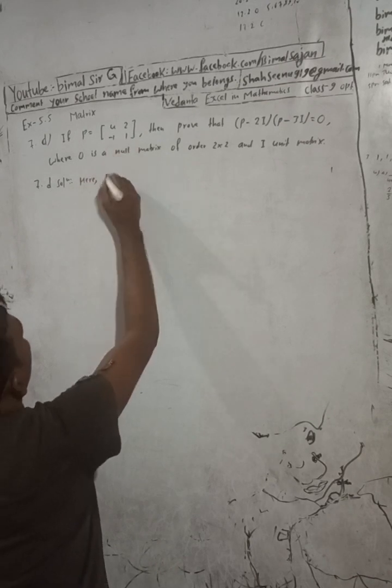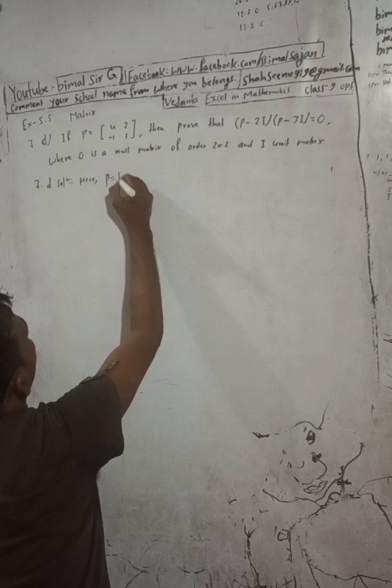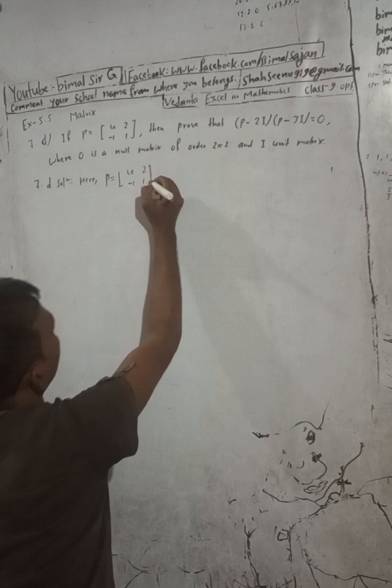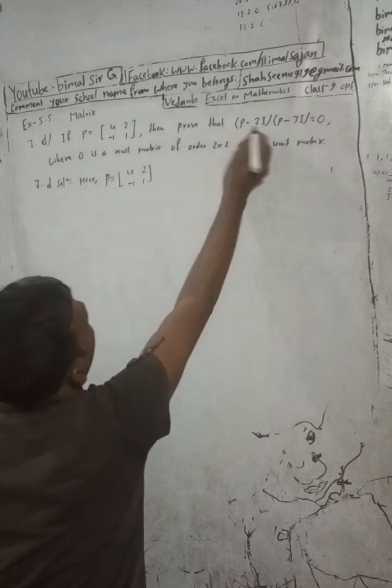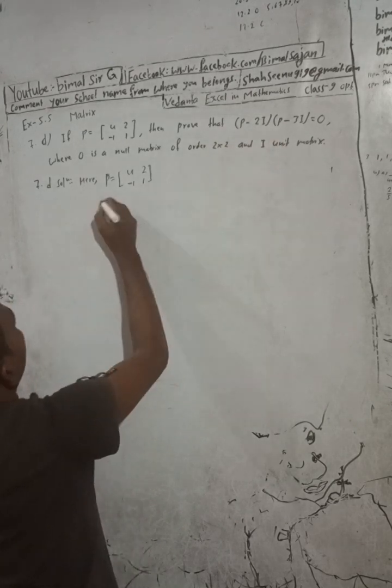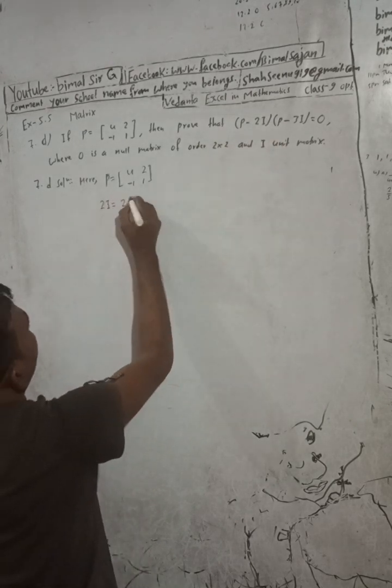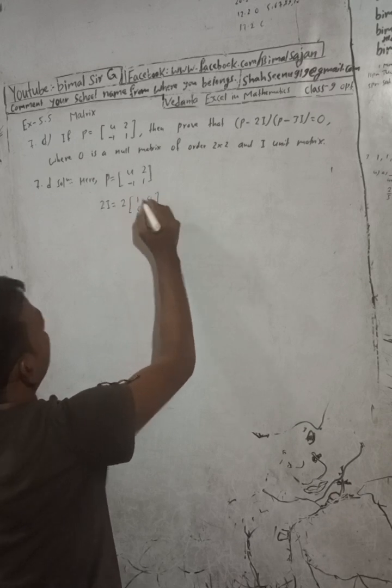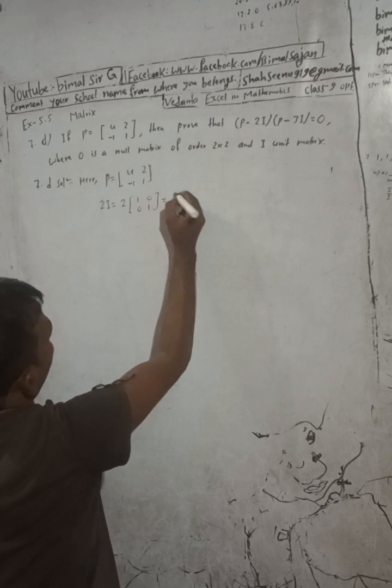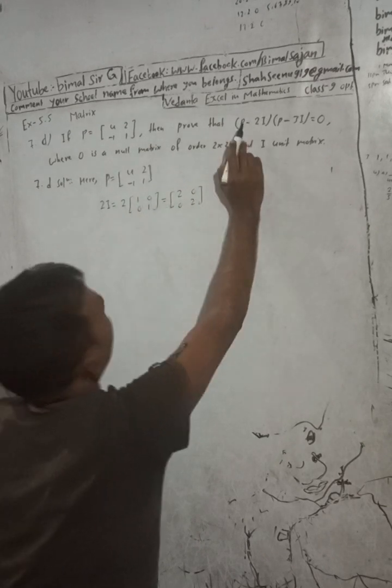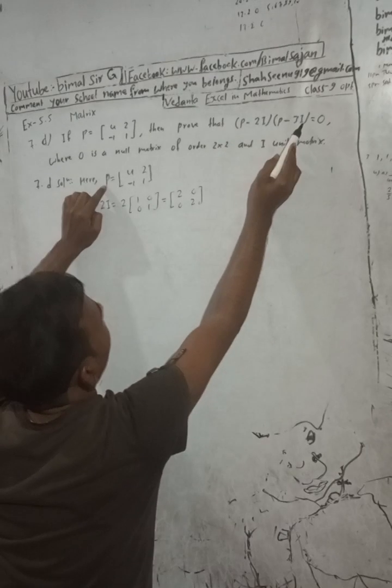Now the question 7d: If P is equal to [4 2; -1 1], then prove that (P - 2I)(P - 3I) is equal to zero, where O is a null matrix and I is the unit matrix. So P is equal to [4 2; -1 1].